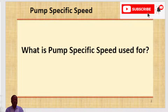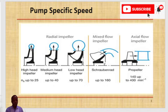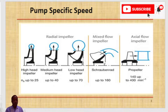We have three types of impellers based on the major direction of flow with respect to the axis of rotation: the radial flow impeller, the mixed flow impeller, and the axial flow impeller. The radial flow impeller is suitable for discharging a relatively small quantity of flow against a high head, the mixed flow impeller for large quantity of flow against a medium head, and the axial flow impeller for large quantity of flow against a small head.